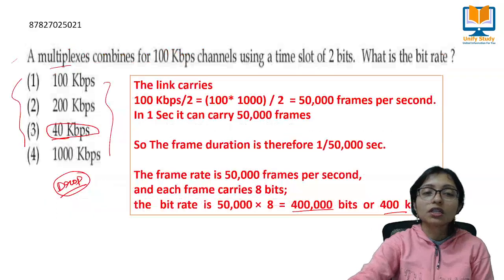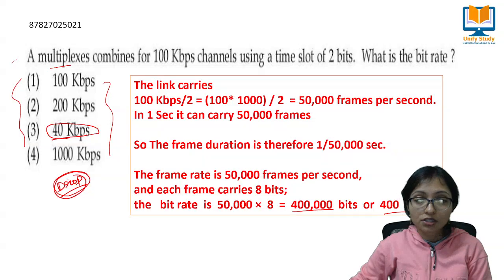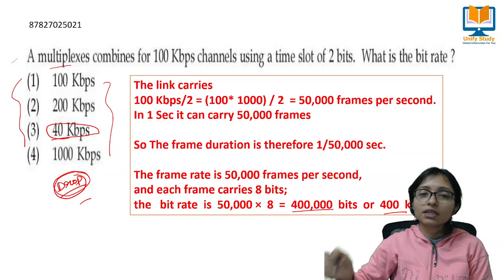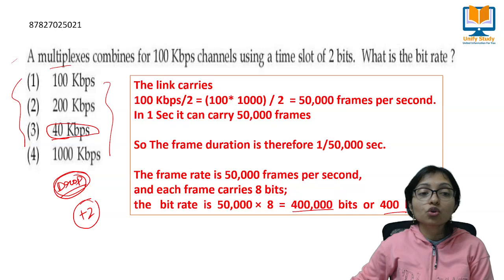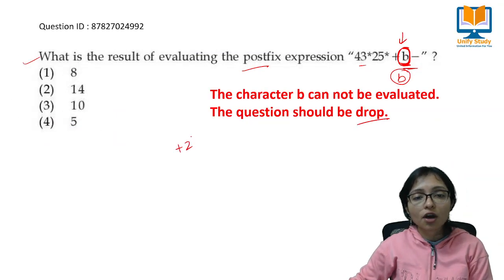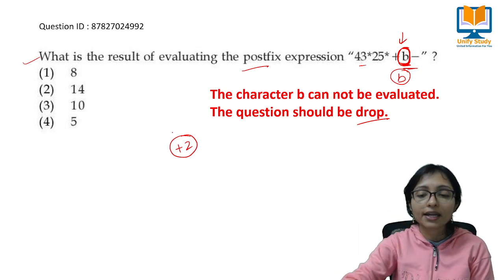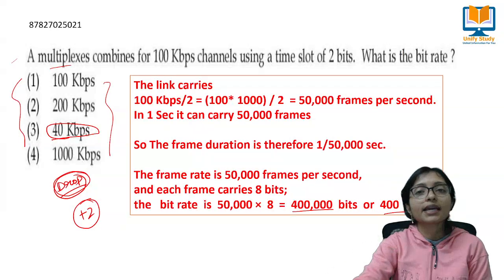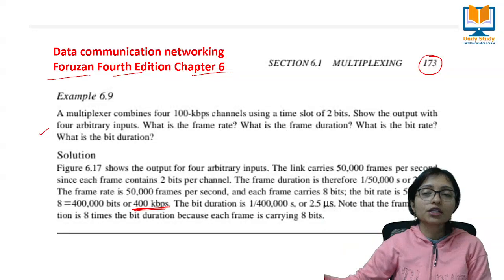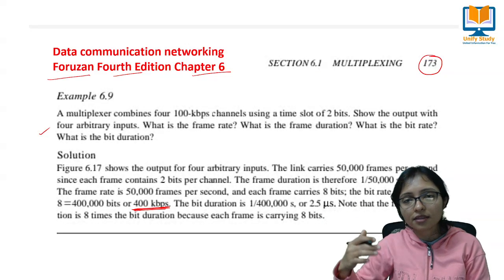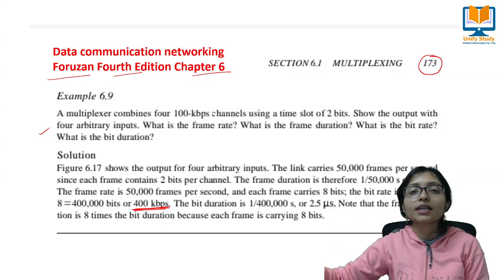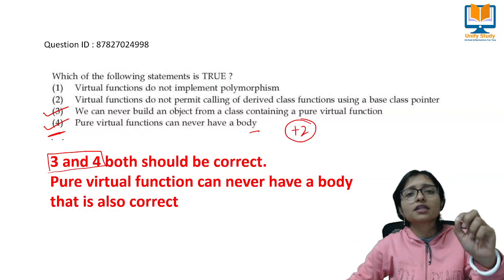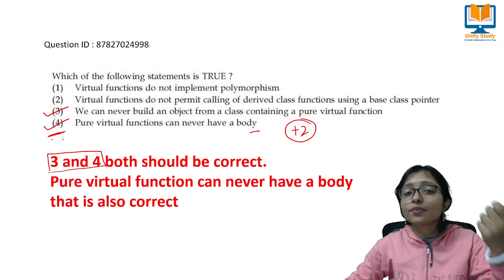For a dropped question, everyone who attempted it will get plus two marks. If you did not attempt the question, you will not get the marks — the drop benefit applies only to those who attempted. This next question should also be dropped, meaning plus two for everyone who attempted. If even one student challenges successfully, everyone gets the benefit, so discuss in groups and coordinate your challenges.